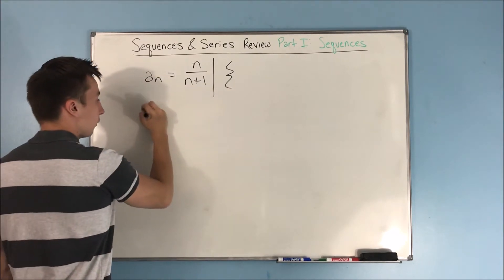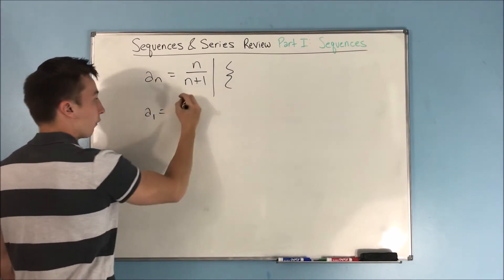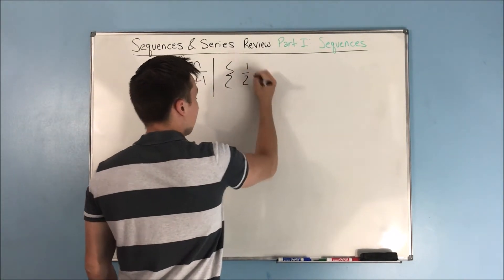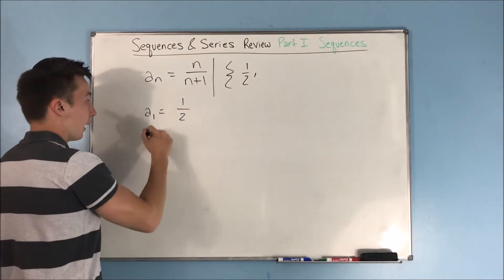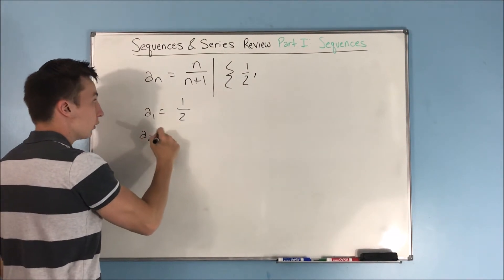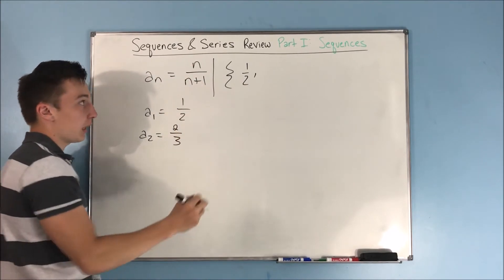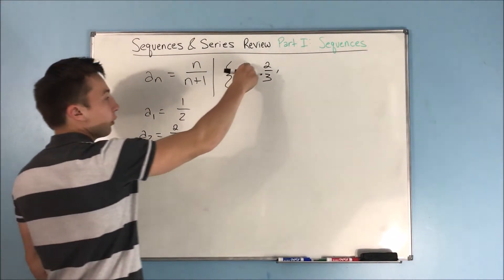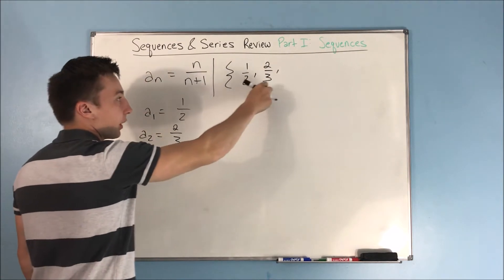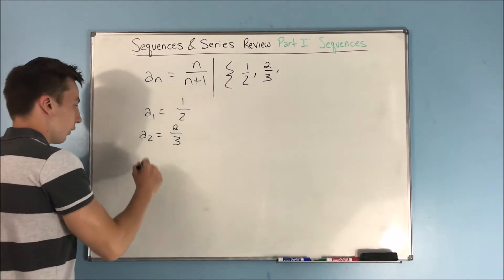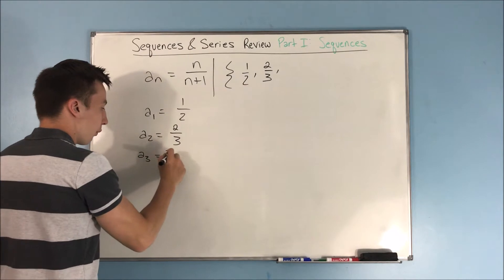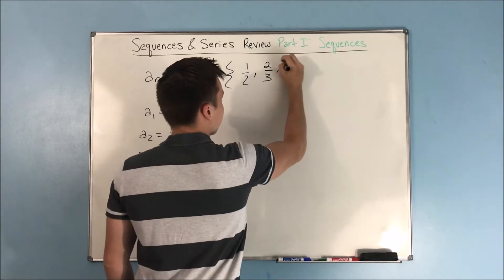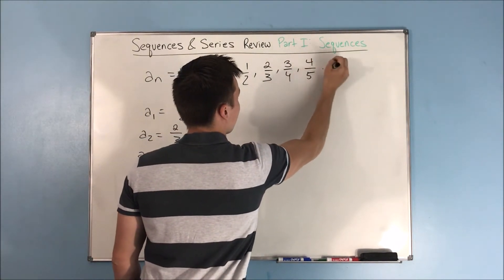If you plugged in 1 for n, you're dealing with the first term, you're dealing with a sub 1. So let's write out this sequence and see a little bit more about what we're talking about. a sub 1, that's just going to be plugging in a 1 for n, and that's going to be 1 half. We get a 1 half here. Let's plug in a 2 for n. We get a sub 2 equals 2 over 3. That's our next term.